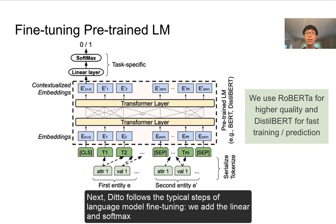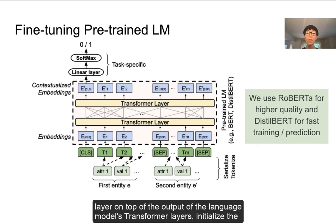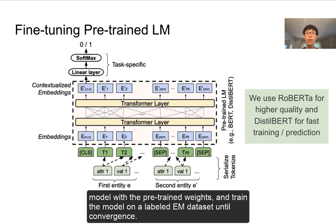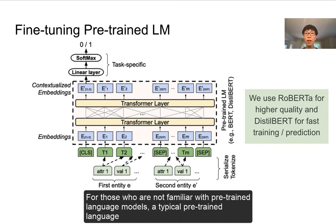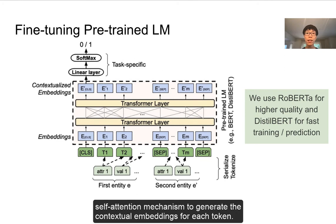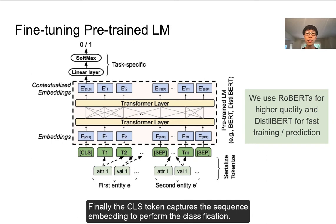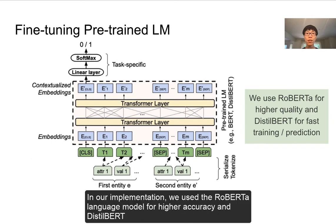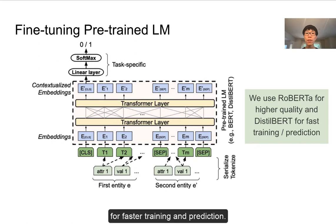DITTO follows the typical steps of language model fine-tuning. We add a linear and softmax layer on top of the output of the language model's transformer layers, initialize the model with pre-trained weights, and train on the labeled EM dataset until convergence. A typical pre-trained language model consists of an embedding layer and multiple — for example, 12 — transformer layers which use a self-attention mechanism to generate contextualized embeddings. The CLS token captures a sequence embedding used for classification. In our implementation, we use the RoBERTa language model for higher accuracy and distributed training for faster training and prediction.